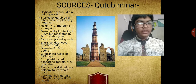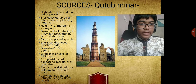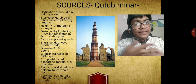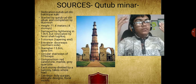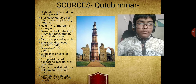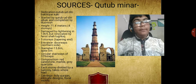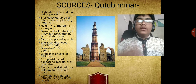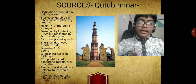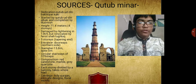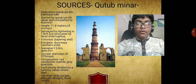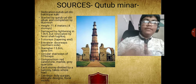This was the initial structure when it was made by Qutbuddin Aibak. But in a lightning strike in 1369, the structure was damaged and therefore it became lower. Afterwards, Firoz Shah Tughlaq, who was there, renovated it again and raised its height to 5 stories, and the height is now again 71.4 meters.